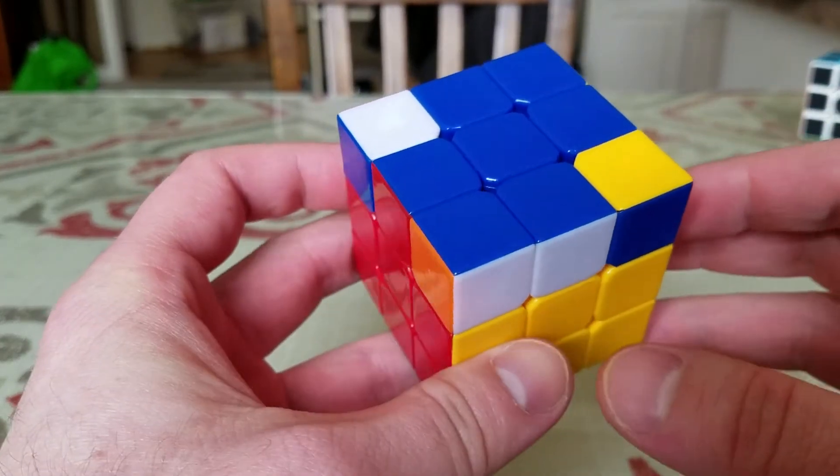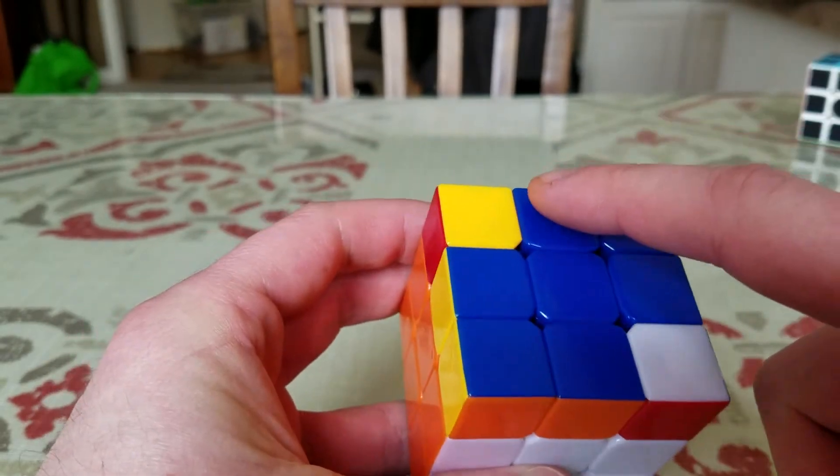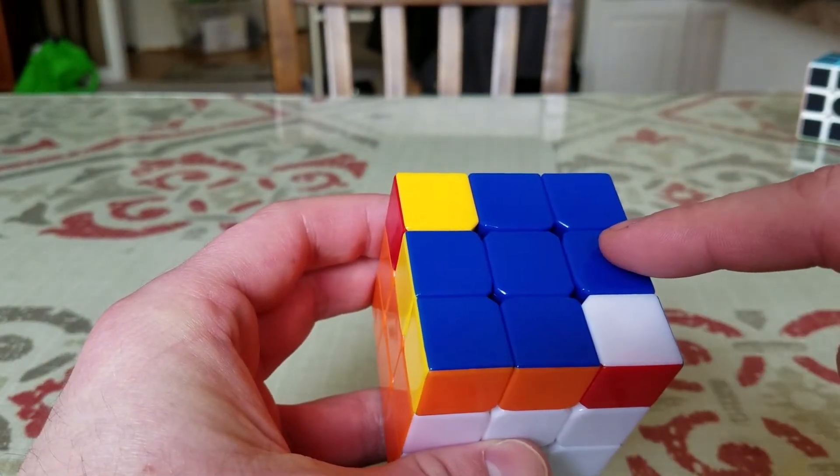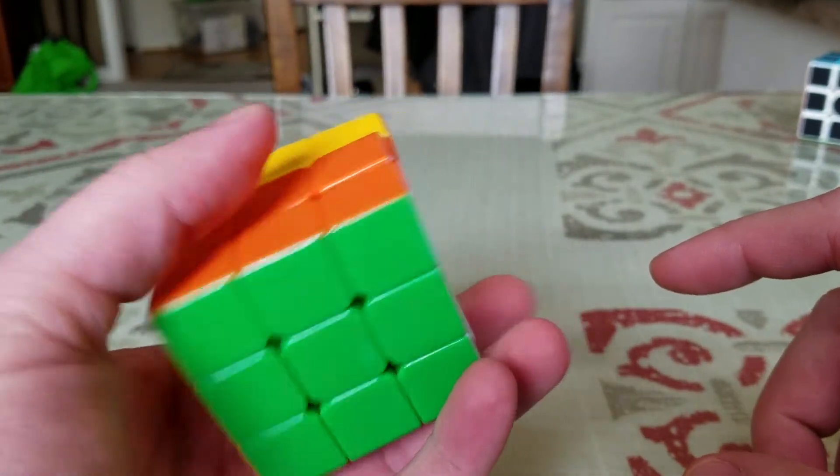If you've gotten this far, you're on step 5 of solving the 3x3 Rubik's Cube. This step requires that you have the blue cross completed on the top and sides, and the green bottom correct.